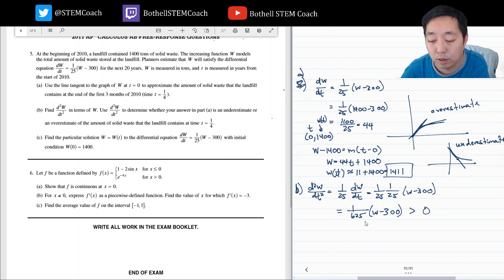So I need to know what the sign of the second derivative is. Well, this is greater than zero at W equals 1400, which is the initial condition. So because that's positive, it's concave up, which is this scenario, and that makes it an underestimate because it's concave up.